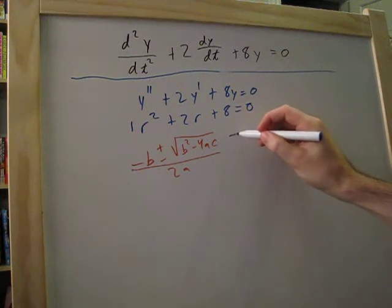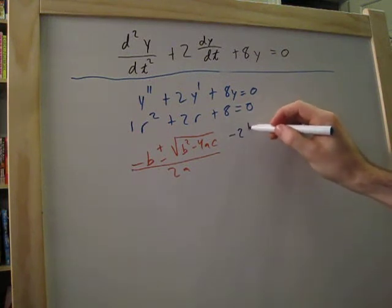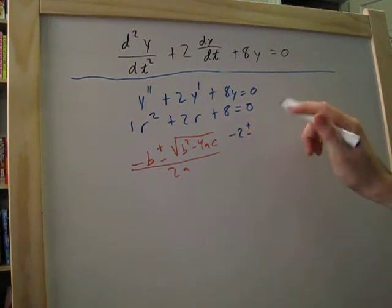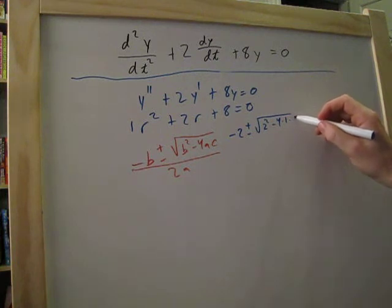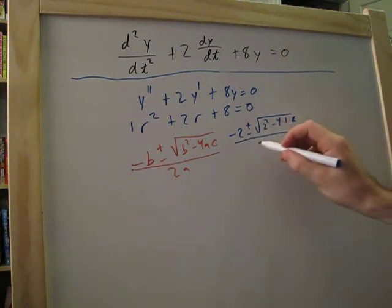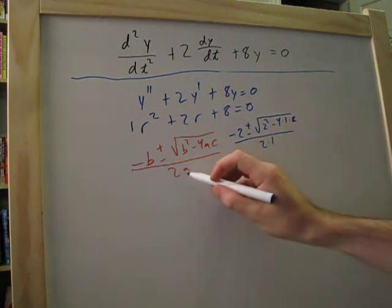Let's go ahead and plug this in. So, this is going to be negative 2 plus or minus the square root of 2 squared minus 4 times 1 times 8. And this is all going to be over 2 times 1, 2 times a.